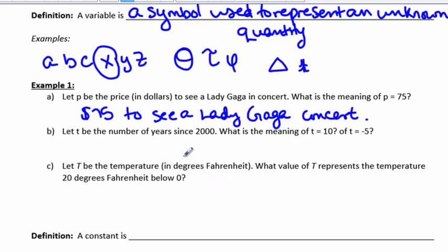Part B, let t be the number of years since 2000. What is the meaning of t equals 10? What is the meaning of t equals negative 5? So if t is equal to 10, the number of years since 2000, that's going to mean that we're looking at 10 years since 2000 to the year 2010.